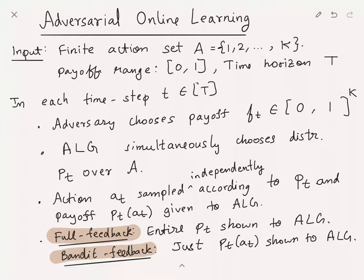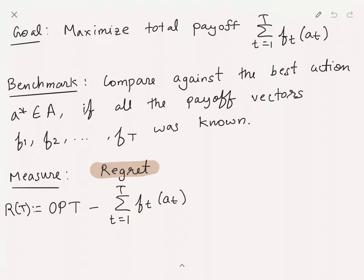We consider two kinds of feedback. In the full feedback model, the algorithm is shown the entire vector F_T — it knows what would have happened if it had chosen some other action. In the harder bandit feedback model, the algorithm only sees F_T of A_T, so it doesn't see what would have happened if it had chosen a different action.